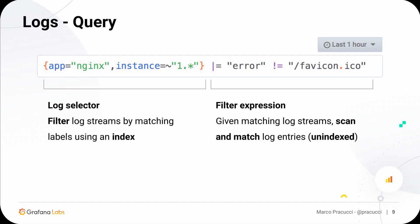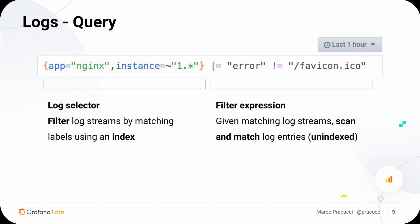The query syntax is pretty similar to Prometheus. It is composed by a log selector and a filter expression. The log selector is used to filter logs by labels — for example, filtering by application equal nginx, or instance regex starting with 1. Given the resulting logs, you can further filter by content using a filter expression. This second step is done via a full scan of the logs, so there's no index. Which, in other terms, means we have basically built a distributed grep.